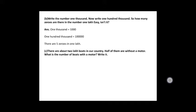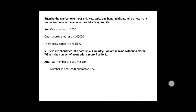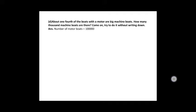There are about two lakh boats in our country. Half of them are without a motor — what is the number of boats with a motor? Total number of boats is two lakhs. Half of them are without a motor, so boats without motor = two lakh ÷ 2 = one lakh. Therefore, one lakh boats have a motor. So in two lakhs, half is one lakh — one lakh boats with motor.